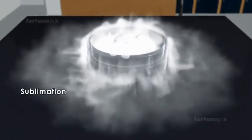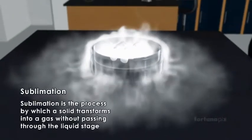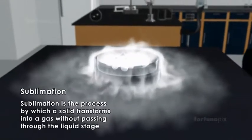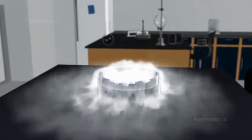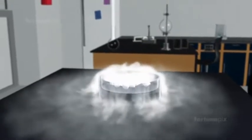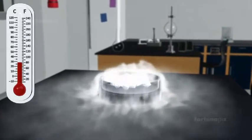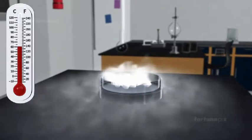Sublimation: Sublimation is the process by which a solid transforms into a gas without passing through the liquid stage. Dry ice is solid carbon dioxide. When its temperature rises, it changes into gas directly.